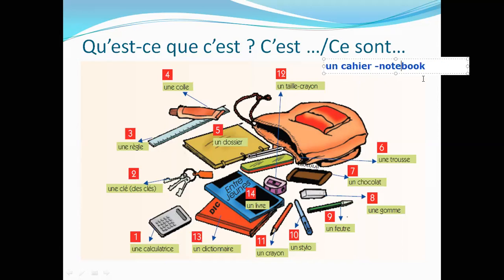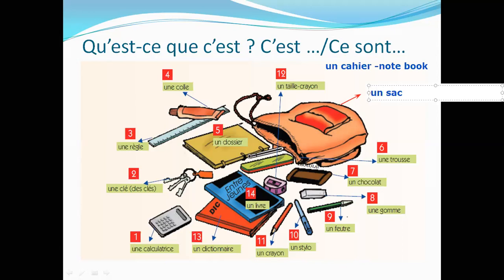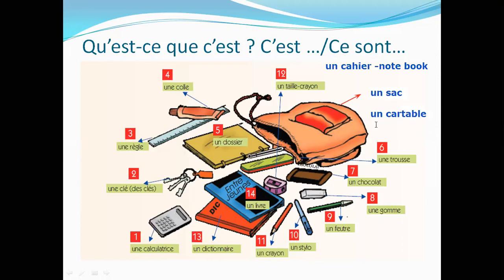One thing missing from the list is a notebook or register — in French it is 'un cahier.' Most basic items a student needs are covered. You should also know how to say 'a bag': generally a bag is 'un sac,' but a school bag specifically is 'un cartable.' The difference is that 'sac' means any bag — a handbag, a backpack — while 'cartable' refers specifically to a child's school bag.